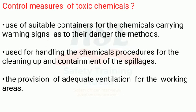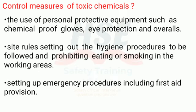Control measures for toxic chemicals include: use of suitable containers for the chemicals carrying warning signs as to their danger, the methods used for handling the chemicals, procedures for the cleaning up and containment of spillages, the provision of adequate ventilation for the working areas, and the use of personal protective equipment such as chemical-proof gloves, eye protection and overalls.